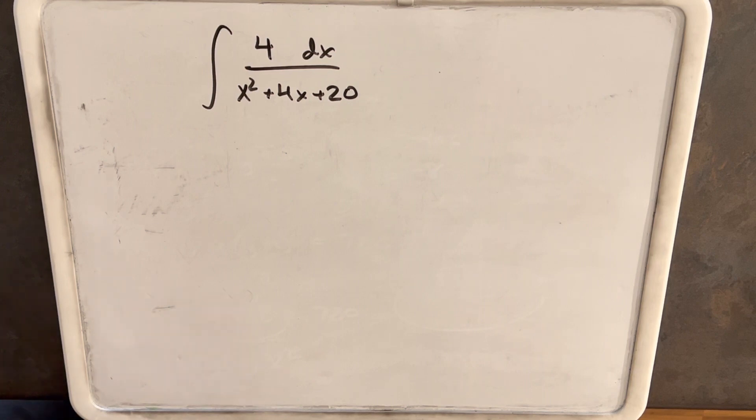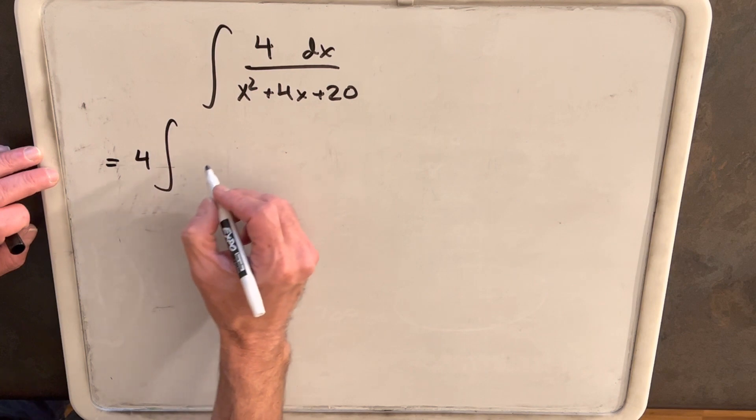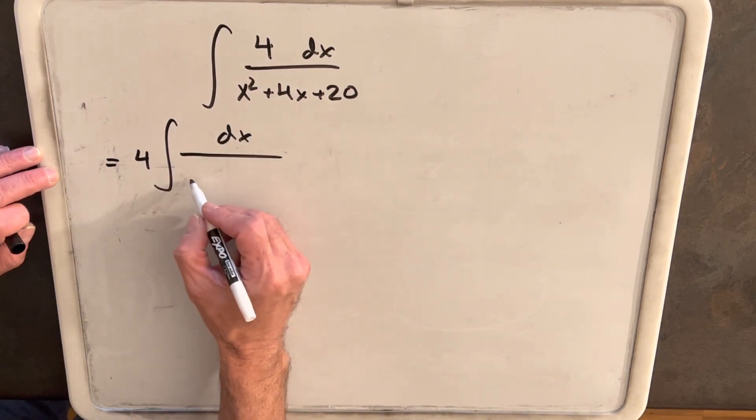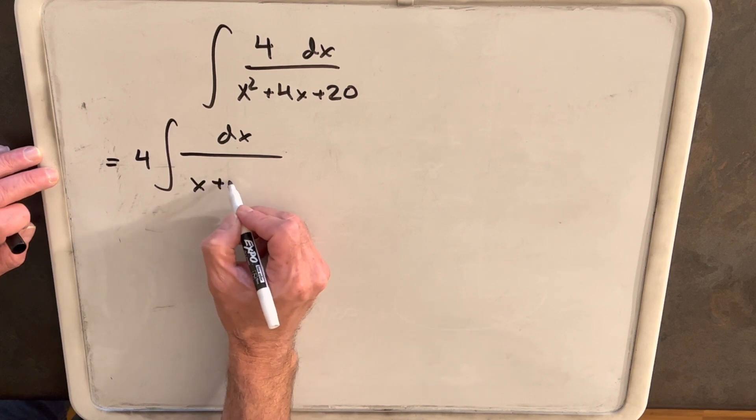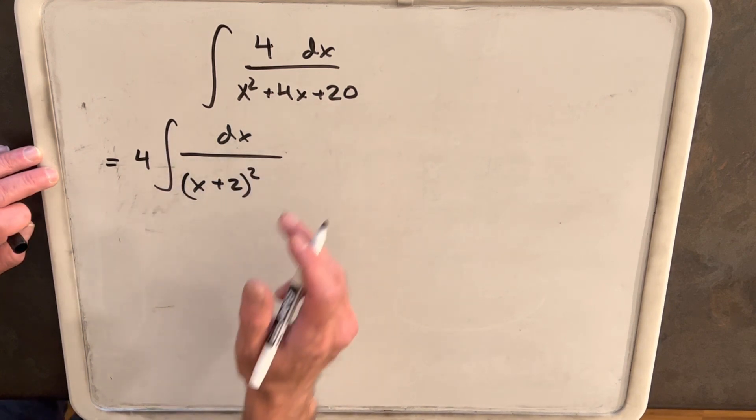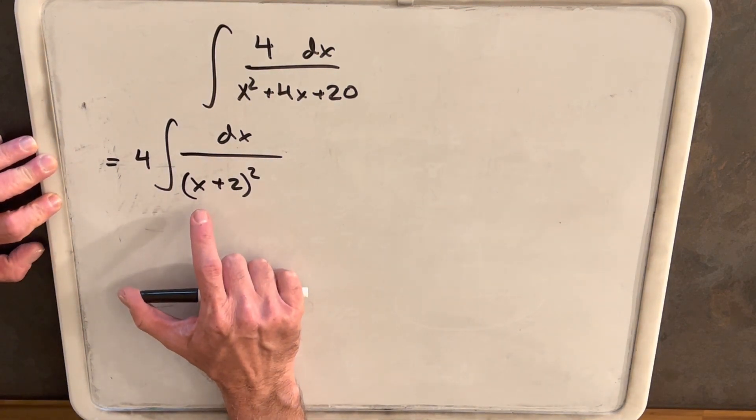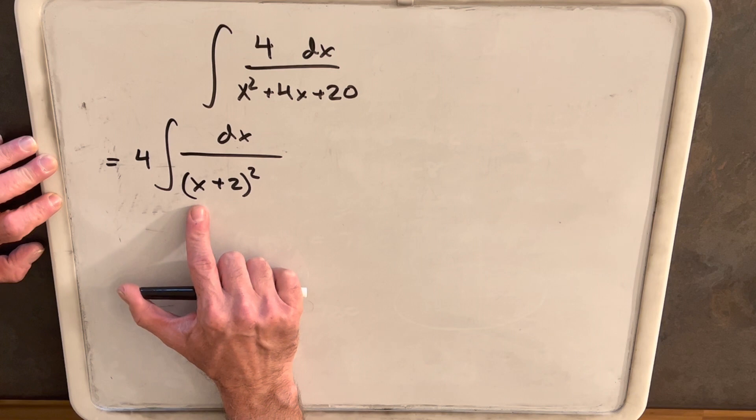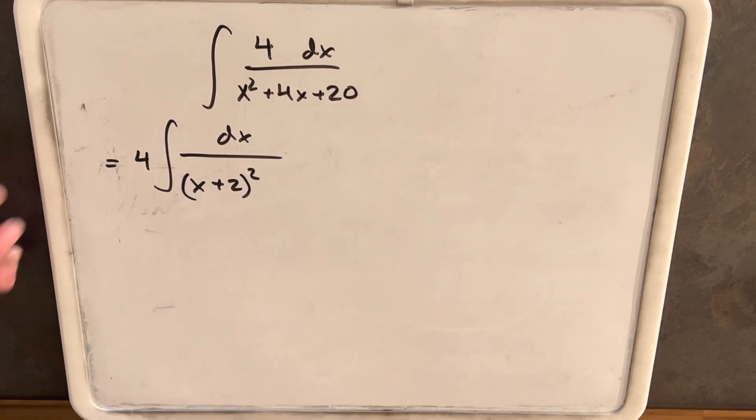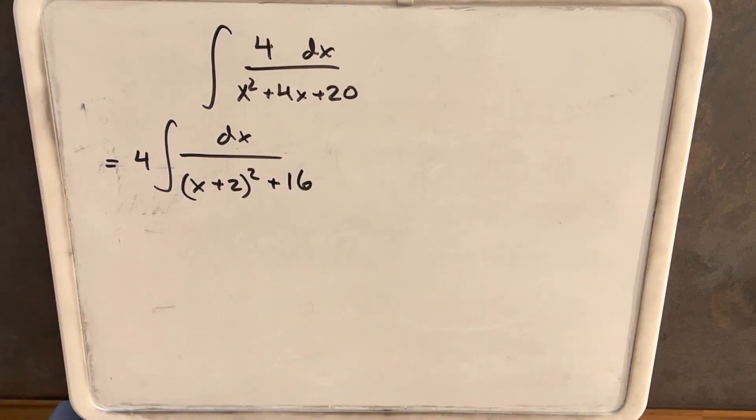So what I'm going to do is complete the square. Let's rewrite this. We'll bring the 4 outside the integral, and then we'll complete the square on the denominator. So we'll write this as x plus 2 squared. If you multiply this out, this would be x squared plus 4x plus 4, but we have 20 here. So we'll add 16 to the 4, and then this is the same expression.